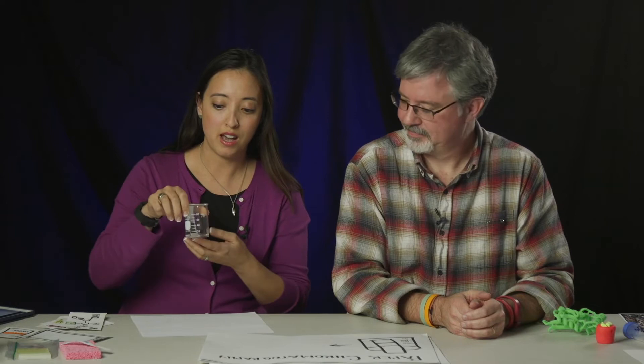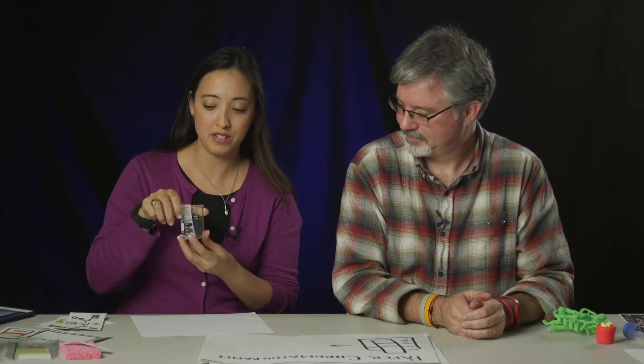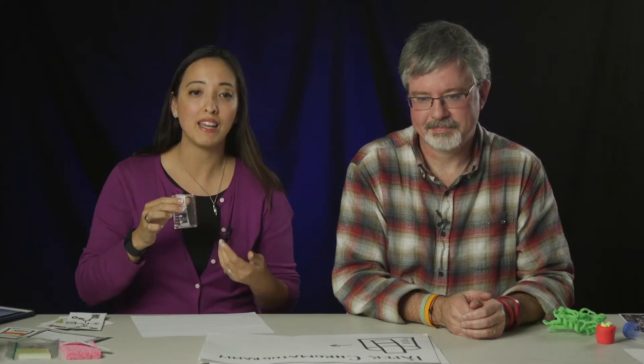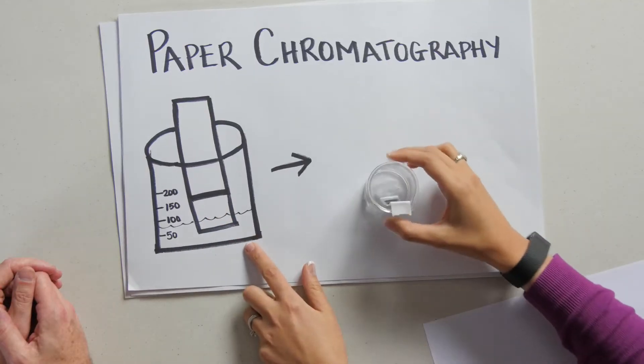Now you may have heard of some ways to sort things, like paper chromatography. We have a little example right here of some alcohol as our solvent, paper, and then just black ink as our material that we're sorting. So this is a demo of this.